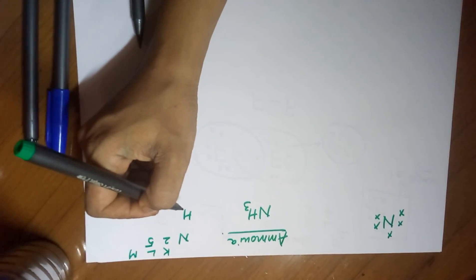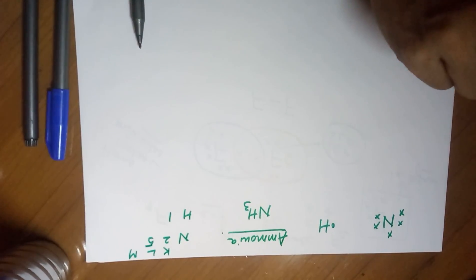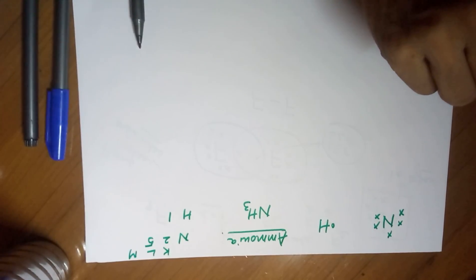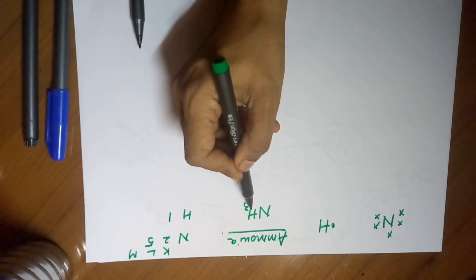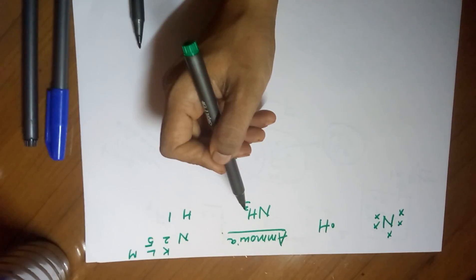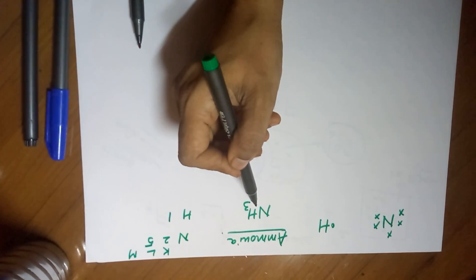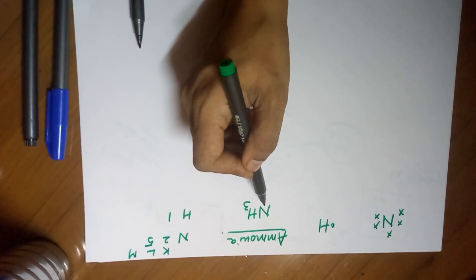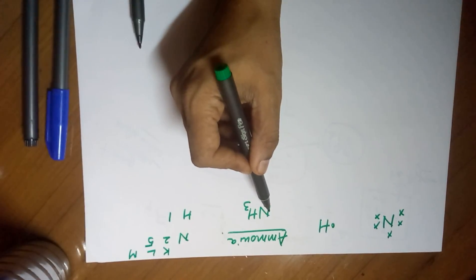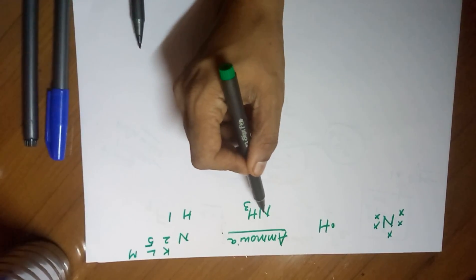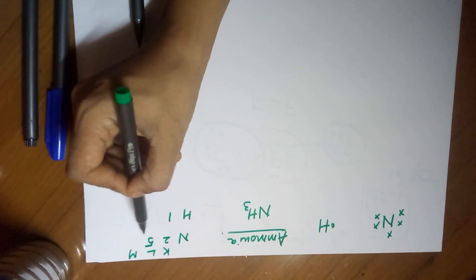Hydrogen has an atomic number of 1, so it has just one electron in its first shell, represented with one dot. Now, nitrogen and hydrogen both are non-metals, both requiring electrons, and since there is no external source, they come to a mutual sharing of electrons. Your nitrogen requires 3 electrons, while each hydrogen has just 1. Therefore nitrogen will share electrons with all 3 hydrogens to get 1 electron from each, hence nitrogen will have its octet complete.